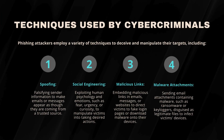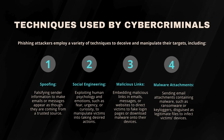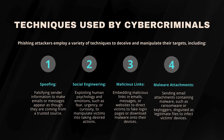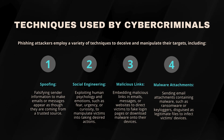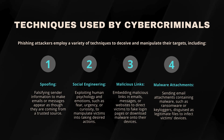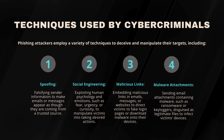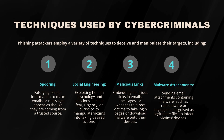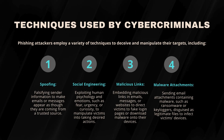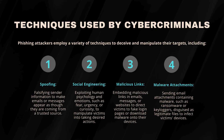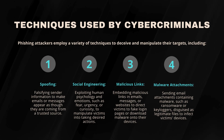Techniques used by cybercriminals. Phishing attackers employ a variety of techniques to deceive and manipulate their targets, including: 1. Spoofing — falsifying sender information to make emails or messages appear as though they are coming from a trusted source. 2. Social engineering — exploiting human psychology and emotions such as fear, urgency, or curiosity to manipulate victims into taking desired actions.